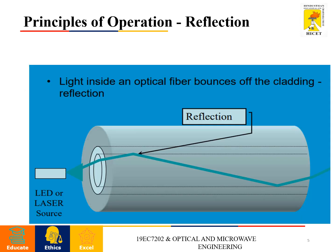Next, principle of operation. The light inside an optical fiber bounces off the cladding by reflection. Let us assume the inner part is core and outer part is cladding. Here, the light source may be an LED or laser source. When a light ray is incident on the core, it is reflected multiple times and passes through the fiber optic cable.